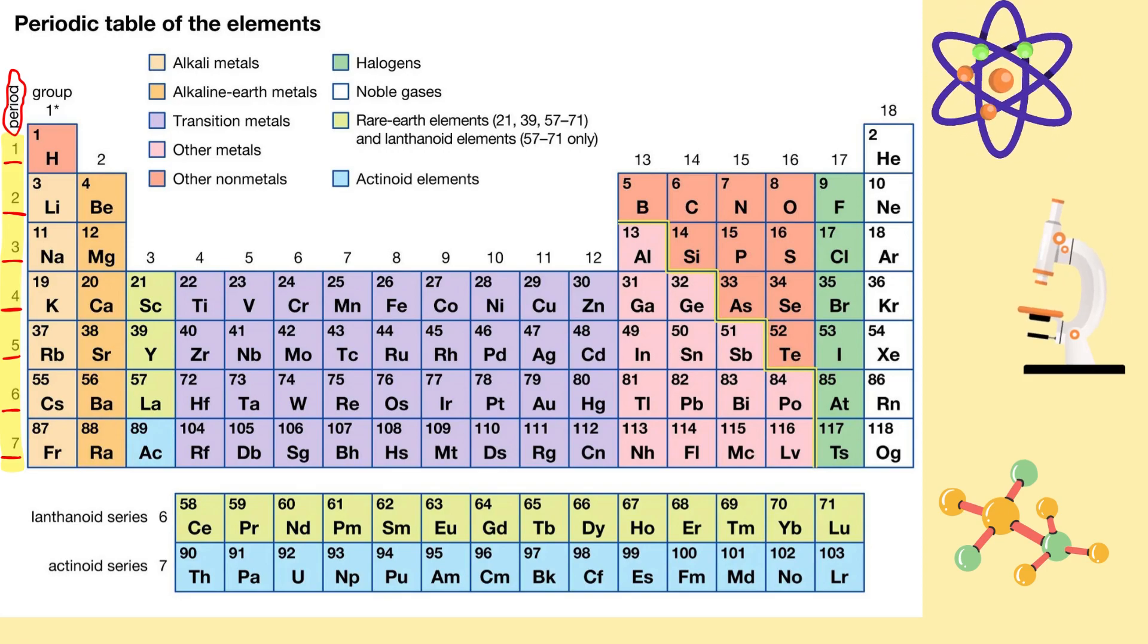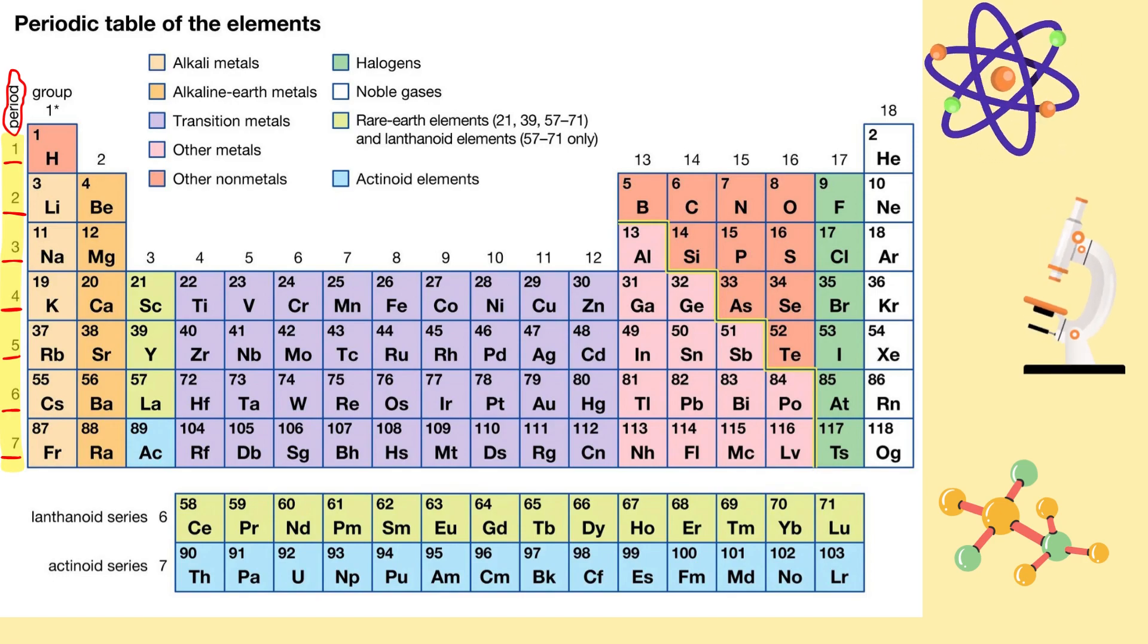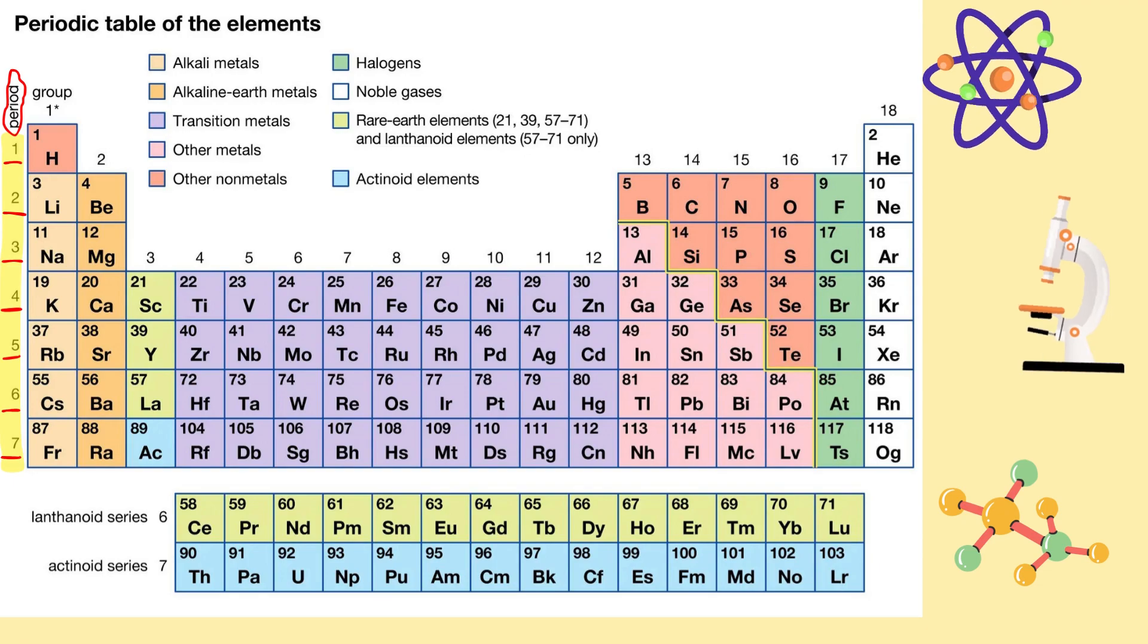In the periodic table, elements like hydrogen and helium are in period one, which means they have one electron orbit. Elements such as sodium, magnesium, and aluminum are in period three, meaning they have three electron orbits.